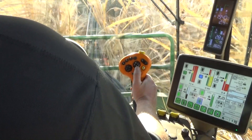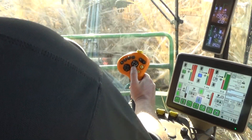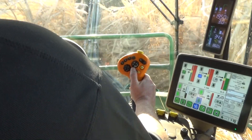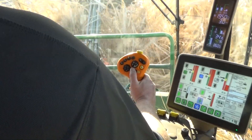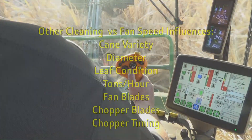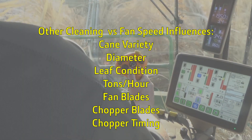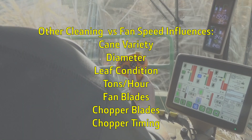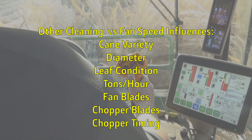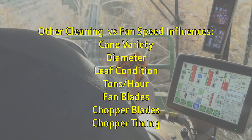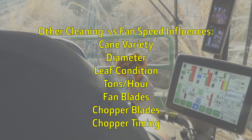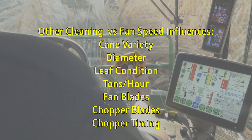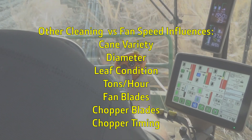If the system does not seem to be able to remove as much trash as previously demonstrated or expected, this indicates other effectors should be considered. Some known influencers of cleaning fan versus fan speed are cane variety, diameter, leaf condition, throughput such as tons per hour, fan blades, chopper blades, and chopper timing should be investigated.